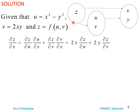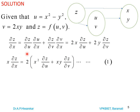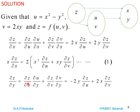From the diagram, ∂z/∂x = (∂z/∂u)(∂u/∂x) + (∂z/∂v)(∂v/∂x). Now ∂u/∂x = 2x and ∂v/∂x = 2y. So we get ∂z/∂x = 2x(∂z/∂u) + 2y(∂z/∂v). Multiplying by x: x(∂z/∂x) = 2[x²(∂z/∂u) + xy(∂z/∂v)]. Similarly, ∂z/∂y = (∂z/∂u)(∂u/∂y) + (∂z/∂v)(∂v/∂y). Here ∂u/∂y = -2y and ∂v/∂y = 2x.